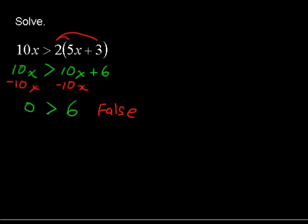So when you're faced with something like this, typically what happens is the variable drops out and you get a false statement, then you can just say there is no solution to this inequality. There is no value that you could plug in for x to make this inequality true.